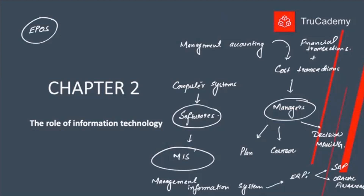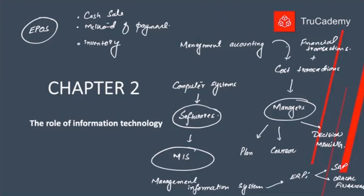Then in different areas of the software they update that data. First, it records that it's a cash sale. At the same time it records the method of payment. After that it also updates the inventory record — that we have sold this item — and reduces the inventory accordingly. So just by one barcode reader click, all these transactions are done: cash and sales accounts are updated, payment method recorded, inventory updated. All this data is automatically recorded, saving a lot of time. EPOS is one method of inputting data into our MIS system.